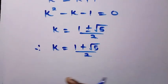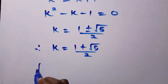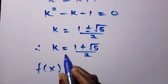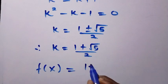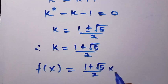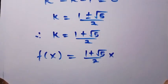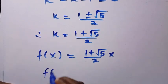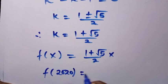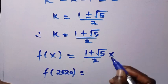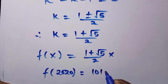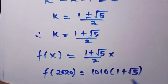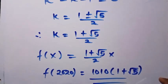Therefore the only value of k we need is (1 + √5) / 2. Recalling that f(x) = kx, we have f(x) = ((1 + √5) / 2) · x. To find f(2020), we replace x with 2020: f(2020) = 1010(1 + √5). That is the value of f(2020).